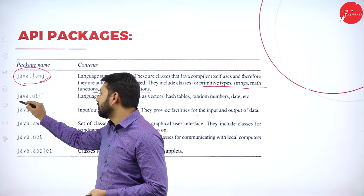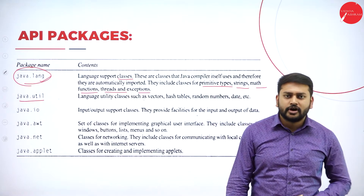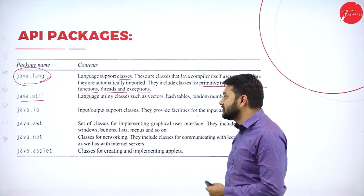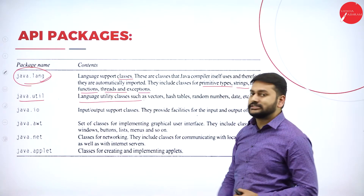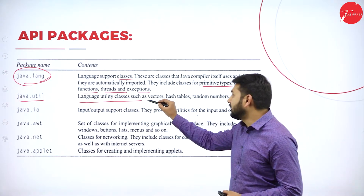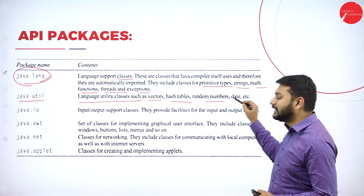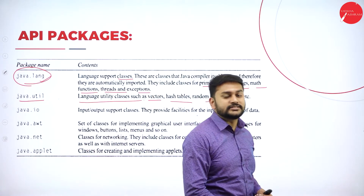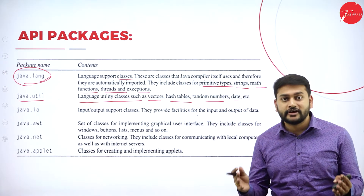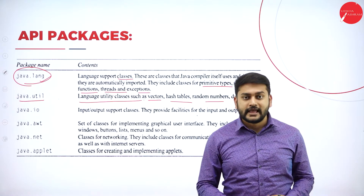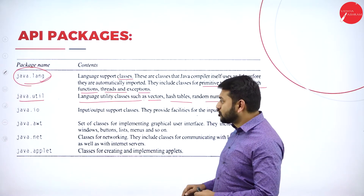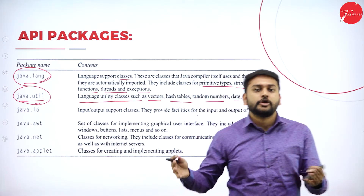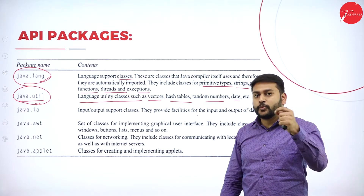The second package is java.util. This package is all about utility classes — language utility classes such as Vectors, HashTables, random numbers, Date, and so on. We have discussed Vectors in detail in previous classes when we covered arrays. This is also a very widely used package.